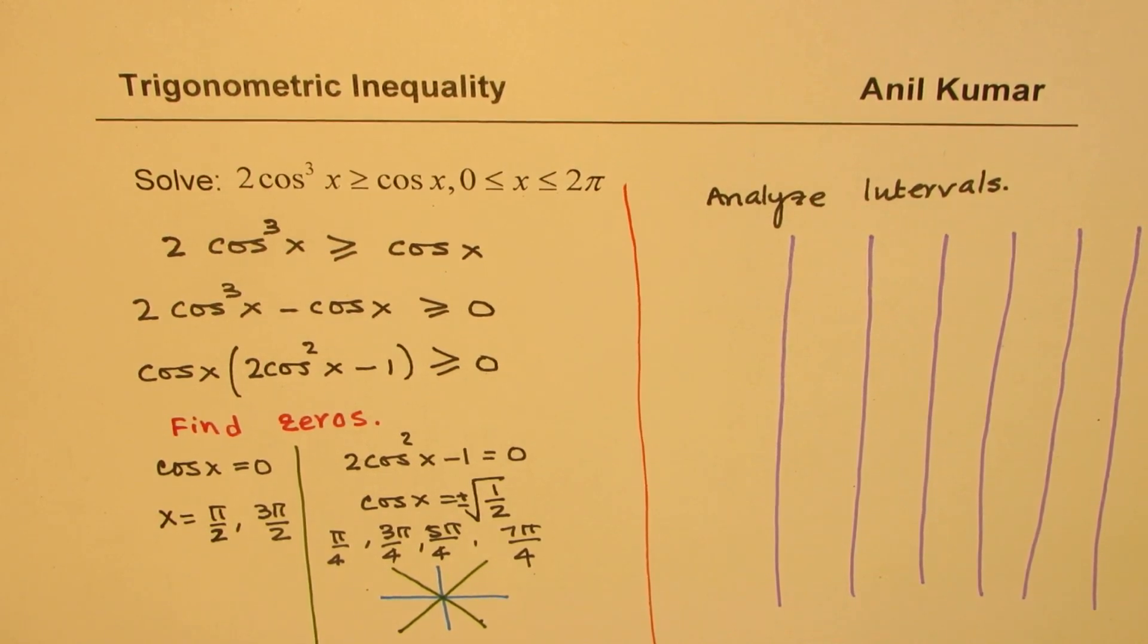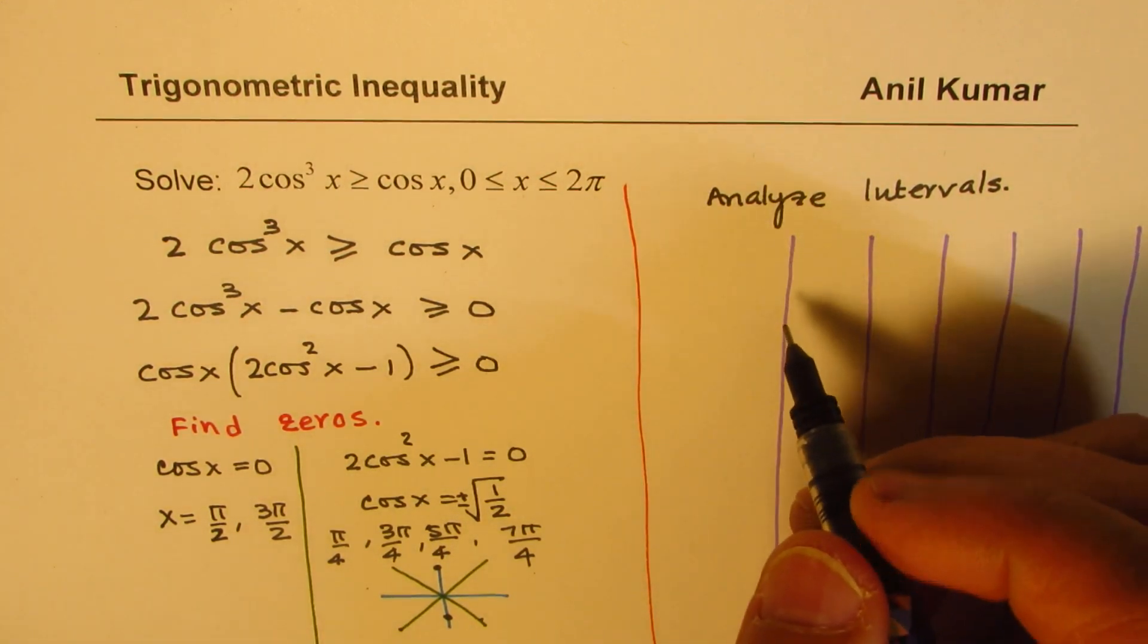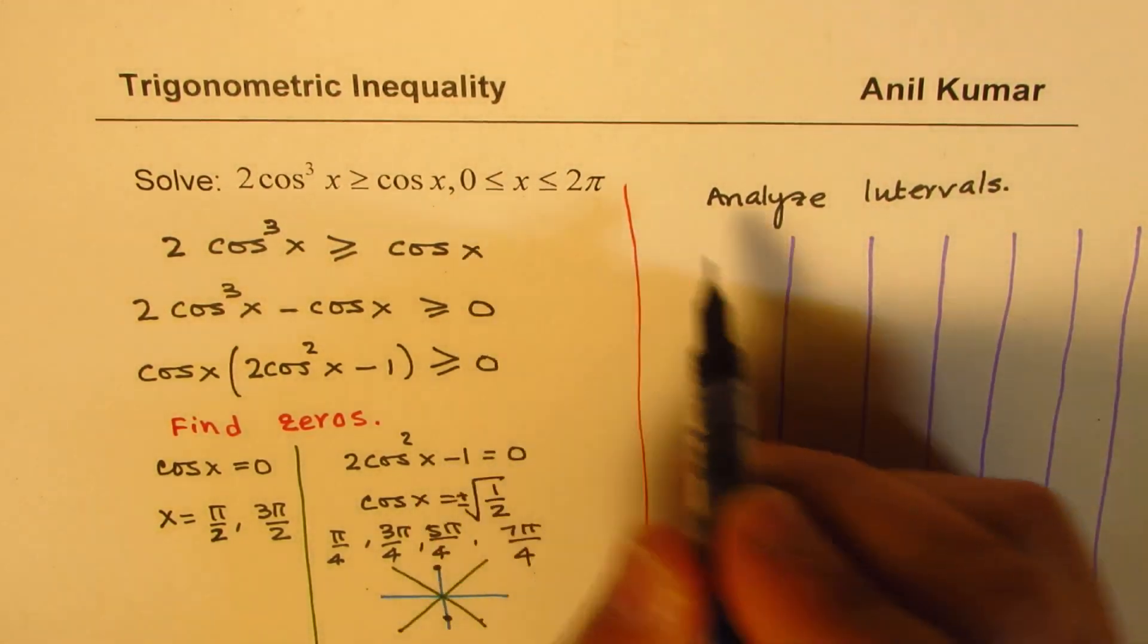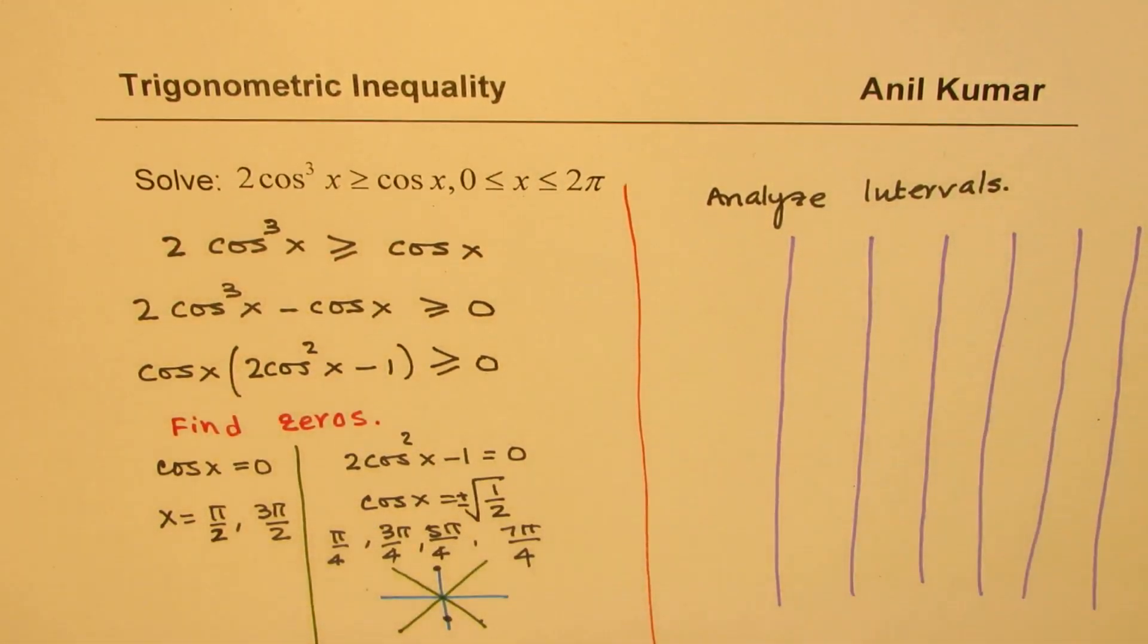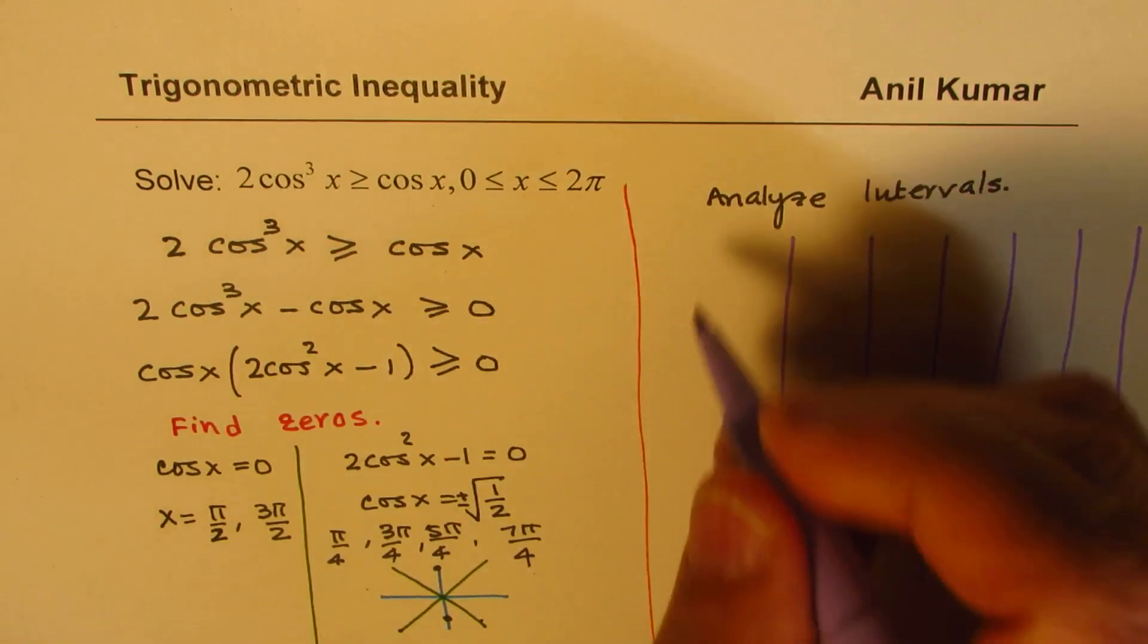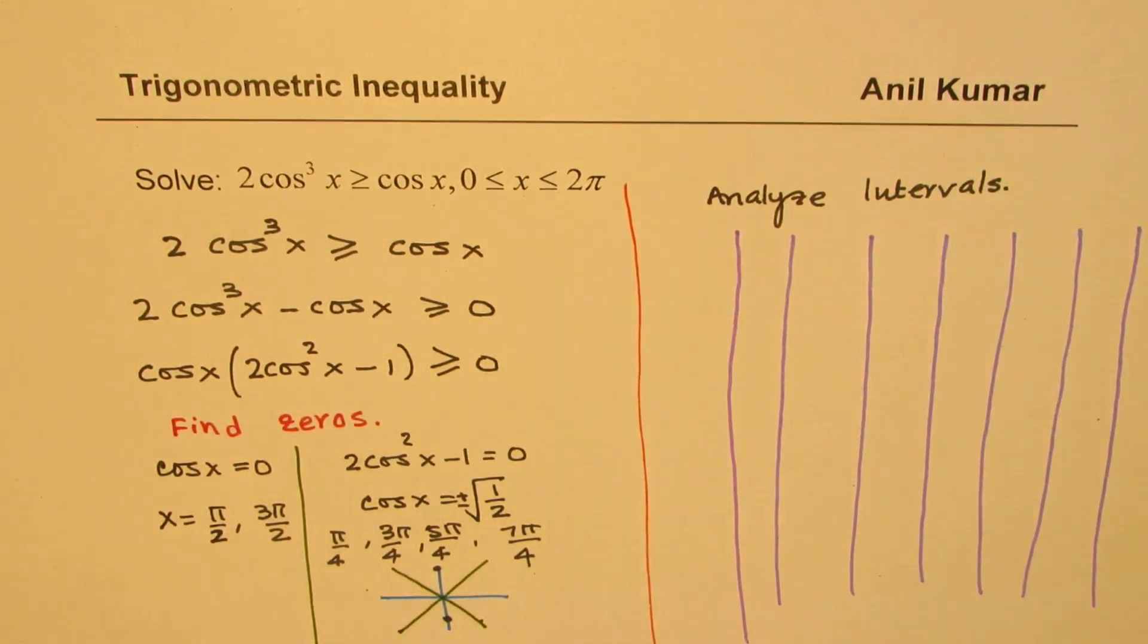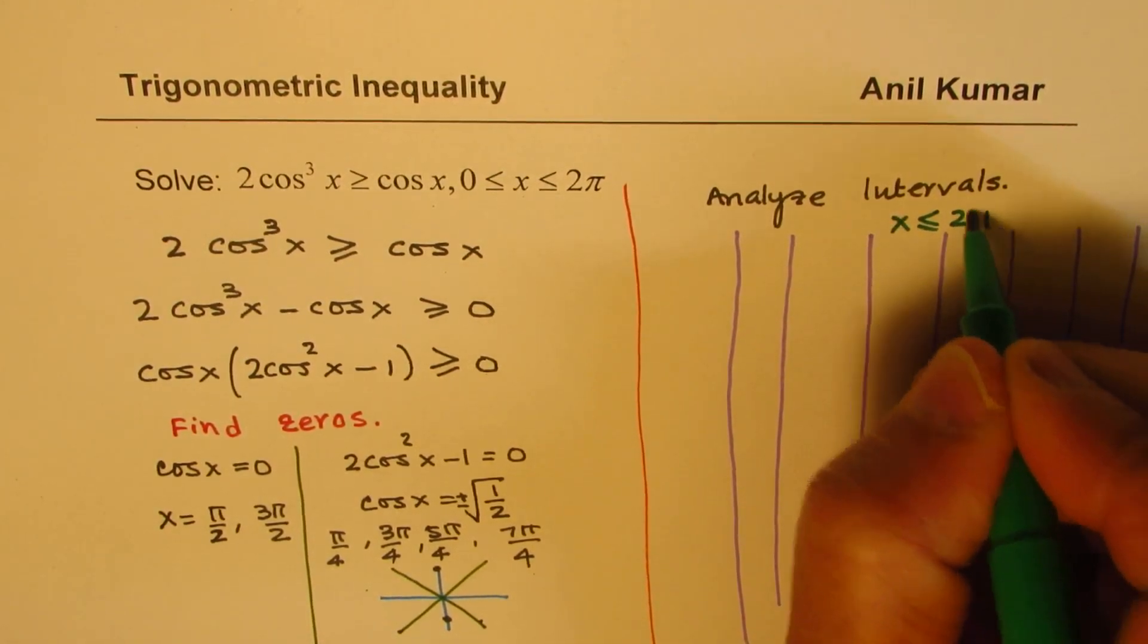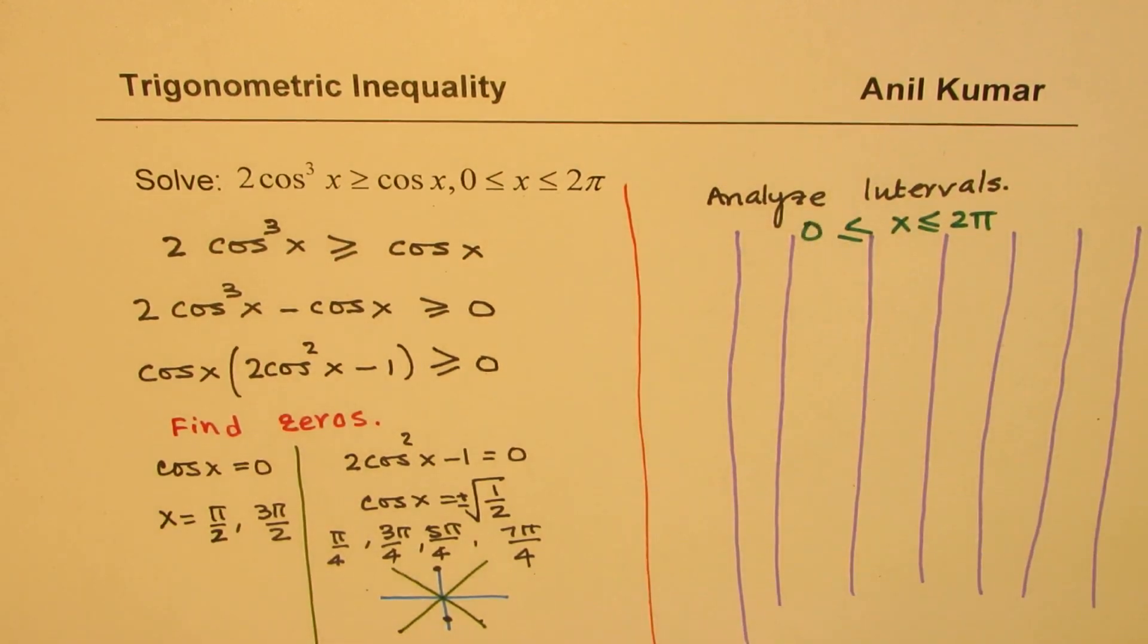We have π/2 here, 3π/2 there, and these 6 zeros. So we could write in order. In our cycle, we are working in the interval 0 to 2π. Let me make one more line here.